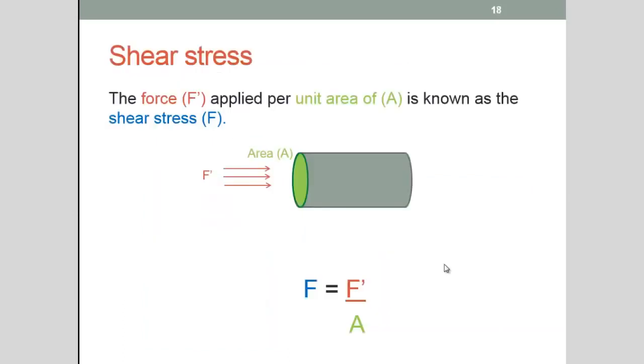So shear stress. Shear stress is defined as the force applied per unit area of a system. So in this hose, the force is applied on the cross section there, and this is indicated by F dash. The area there in green, the cross section, and the shear stress is that force divided by the area.